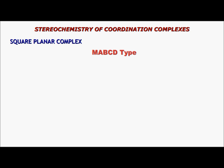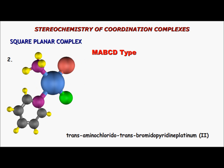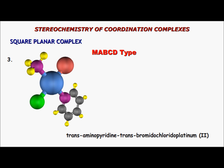Next comes the MABCD type — for example, amine bromido chlorido pyridine platinum(II) — which has three geometric isomers. In one isomer, the amine ligand is trans with bromido; in another, the amine ligand is trans with chlorido; and in the third, the amine ligand is trans with the pyridine ligand.